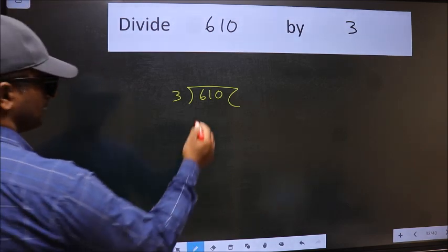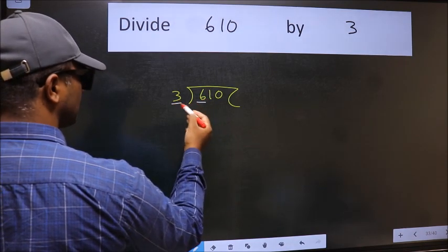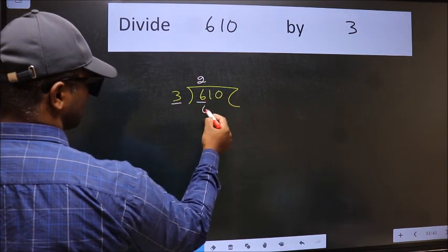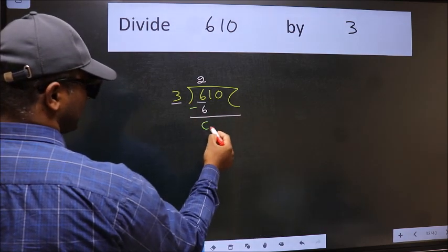Next, here we have 6 and here 3. When do we get 6 in the 3 table? 3 2's 6. Now we should subtract. We get 0.